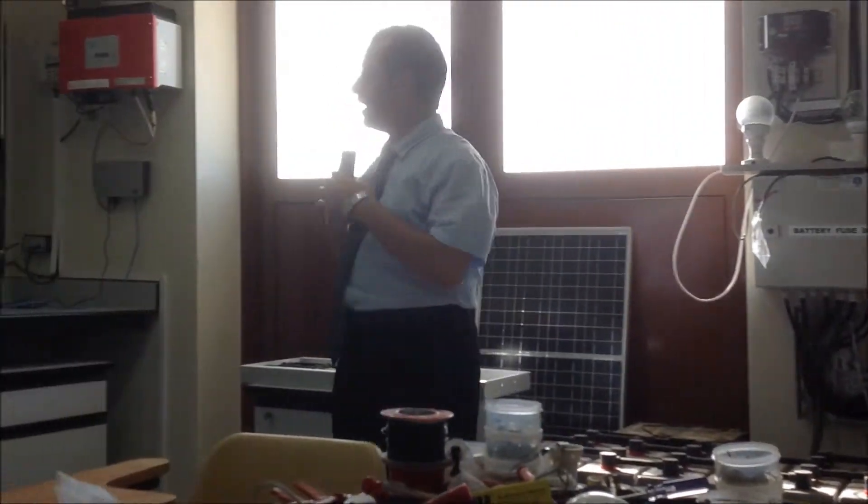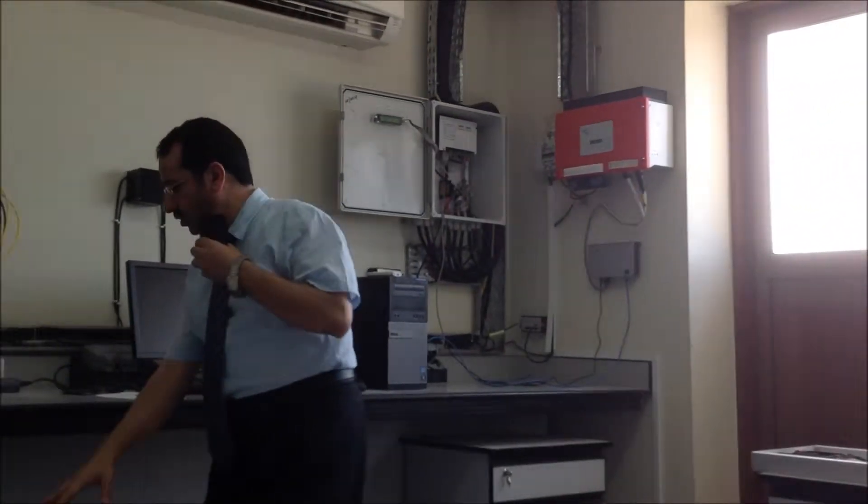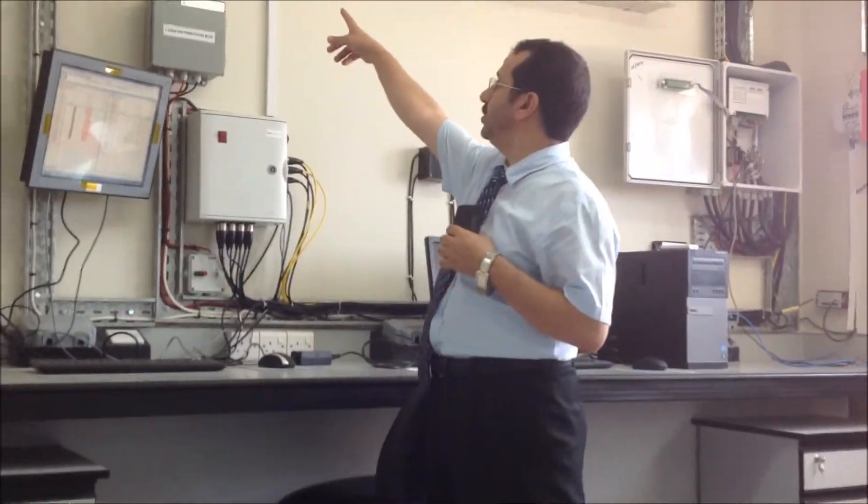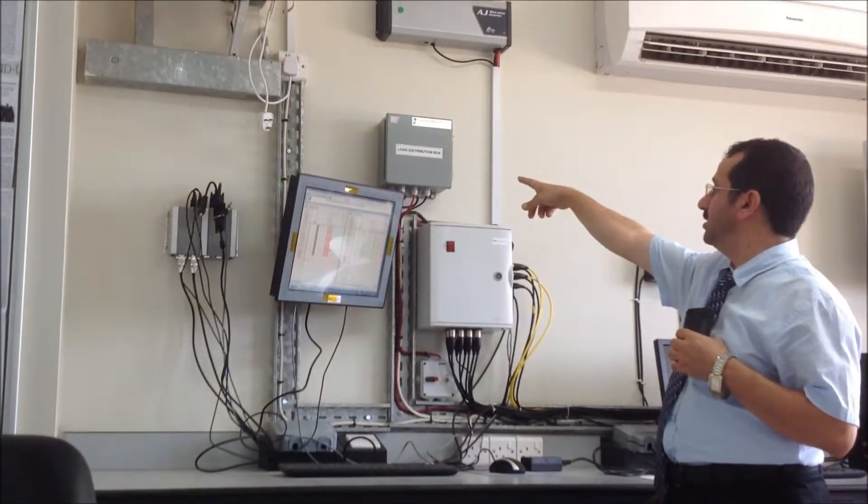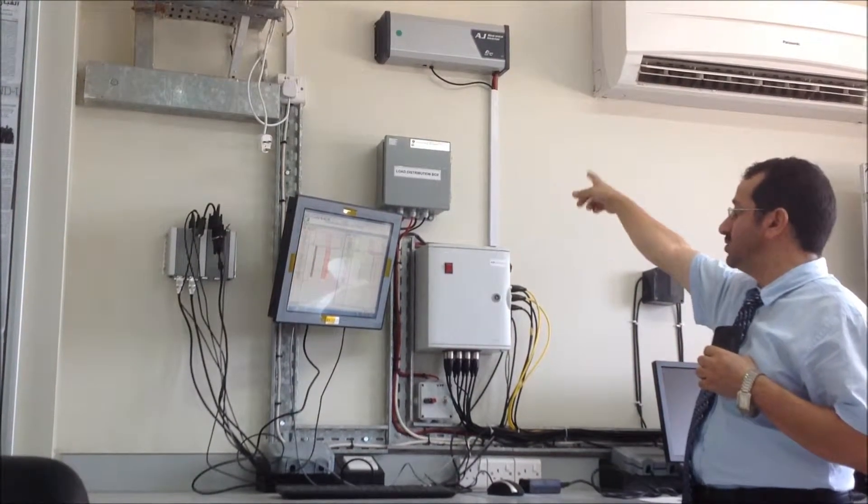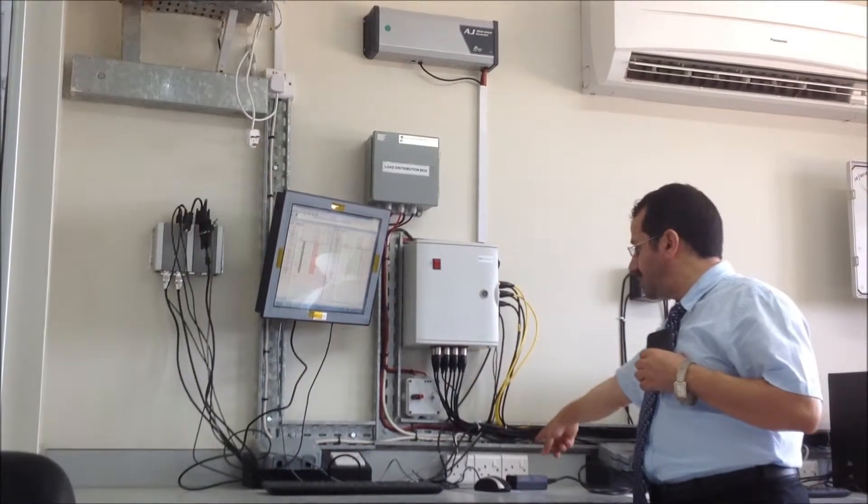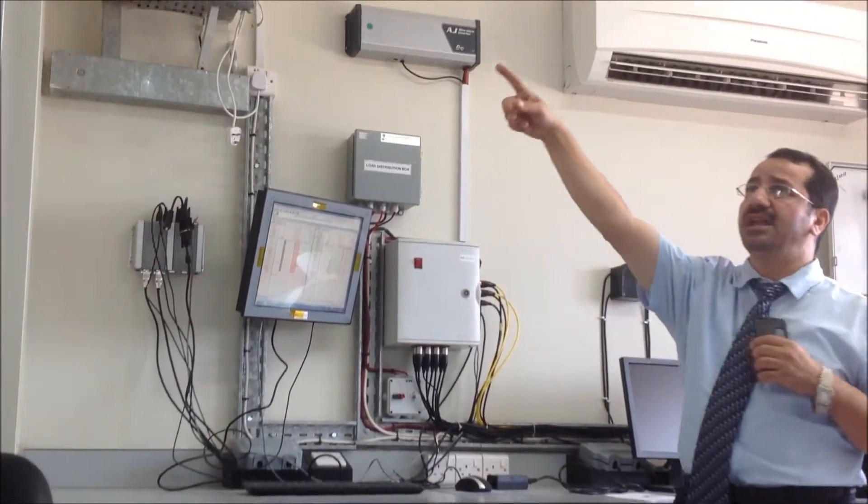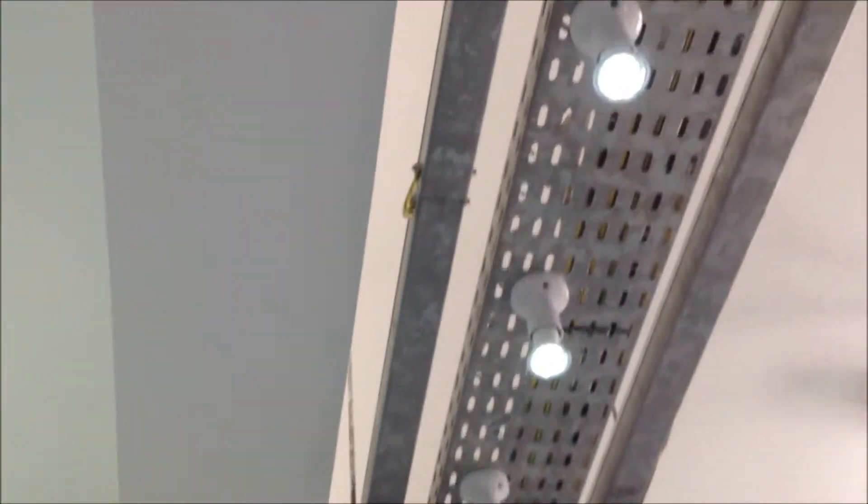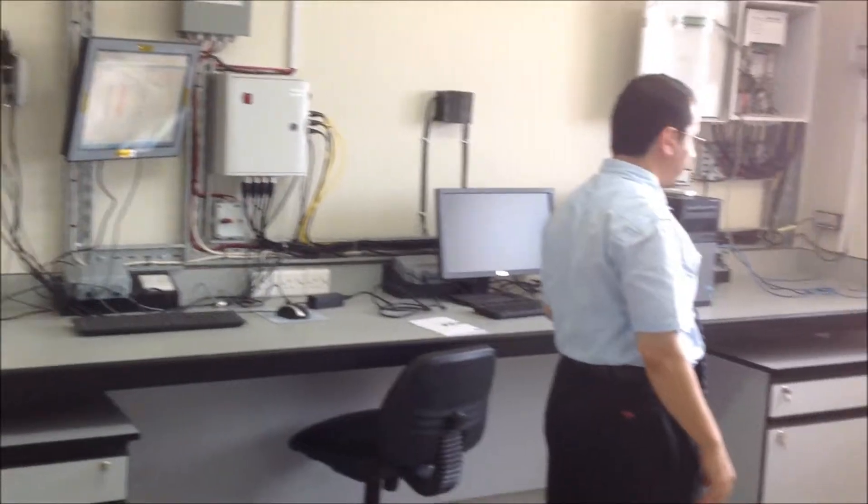The other part output from the charge controller, the cables come to the load where we have a load distribution box with inverter here to convert from DC to AC. So we have either DC output or AC output. You can see these lights have been working for the last seven or eight months continuously without stopping. All the lights in the lab have been working continuously for six or seven months.